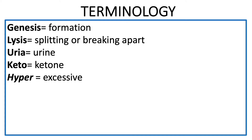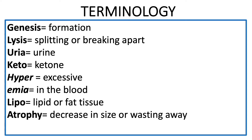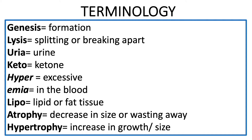'Hyper' refers to excessive, as in hypertension or hyperglycemia. 'Emia' means in the blood. 'Lipo' refers to lipid or fat tissue. 'Atrophy' refers to a decrease in size or wasting away of a tissue. 'Hypertrophy' refers to increasing growth or size of a tissue.